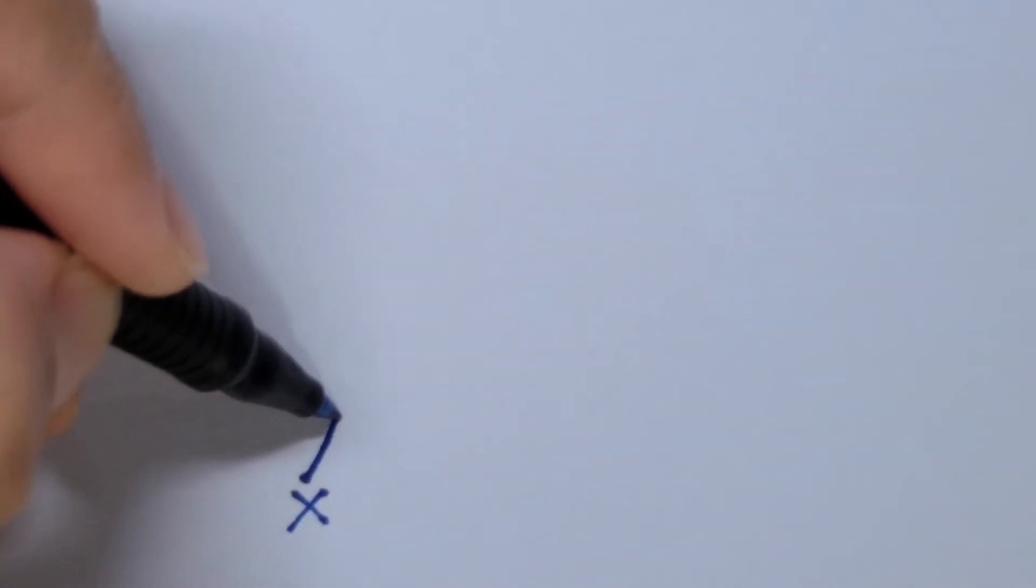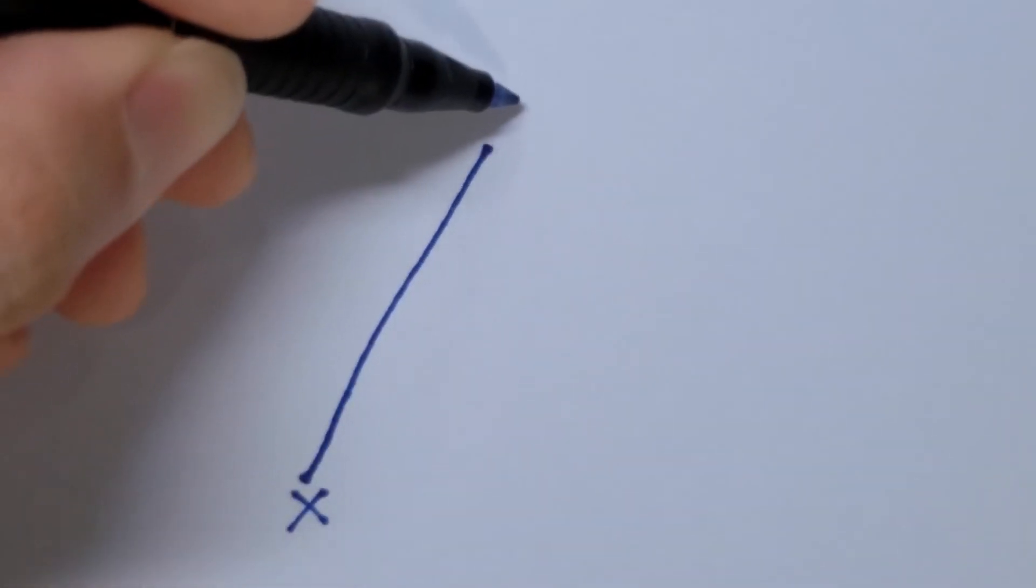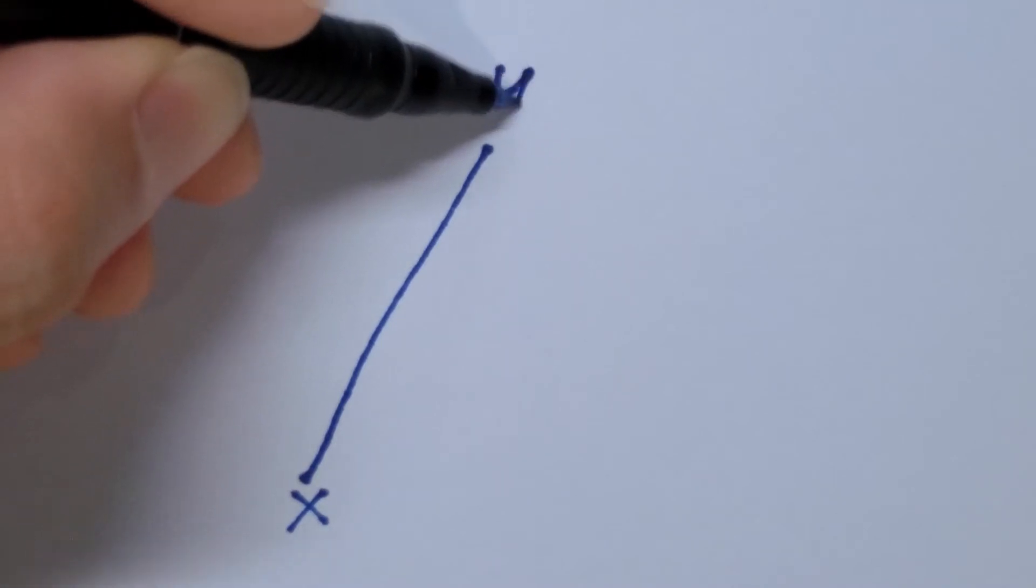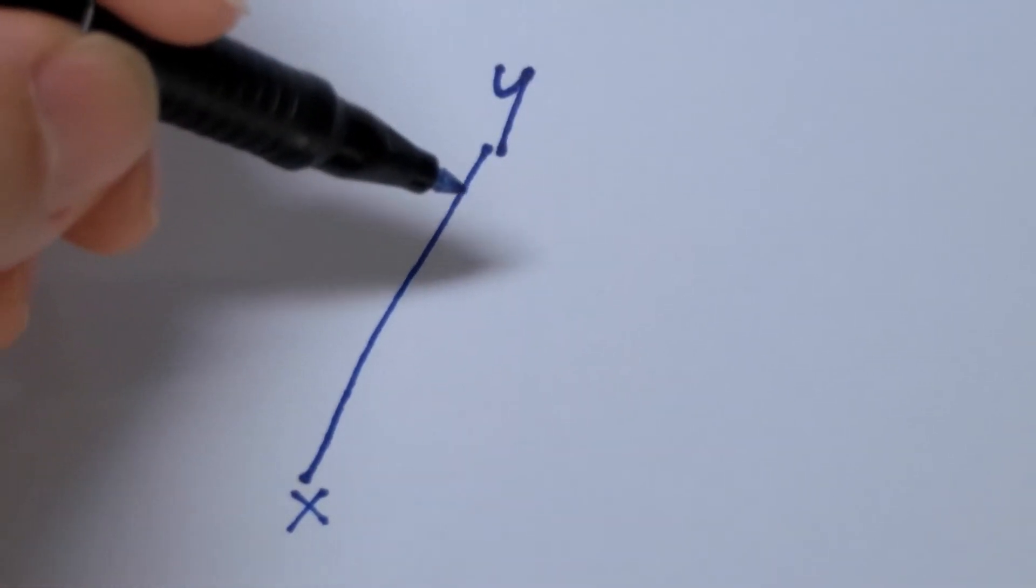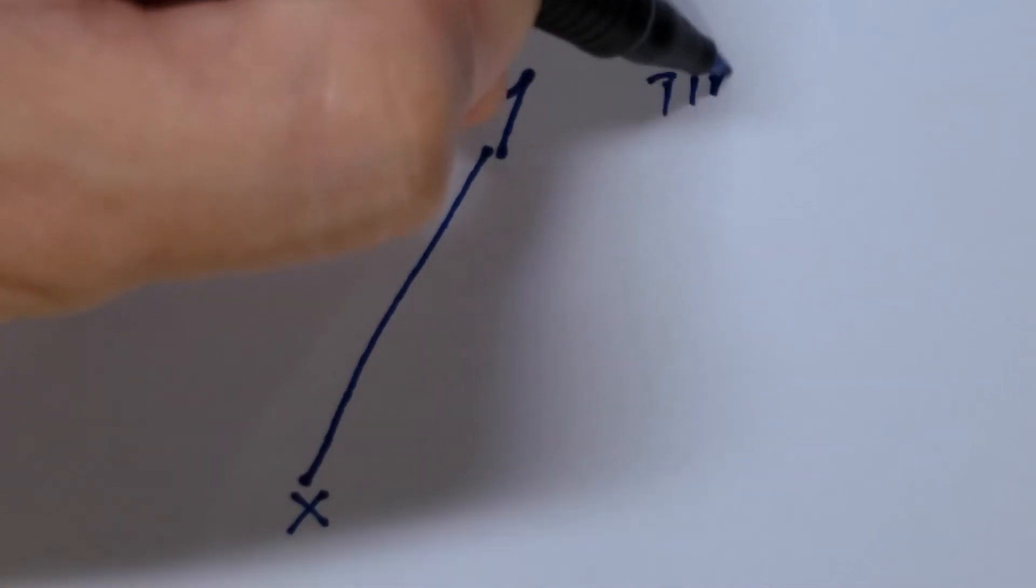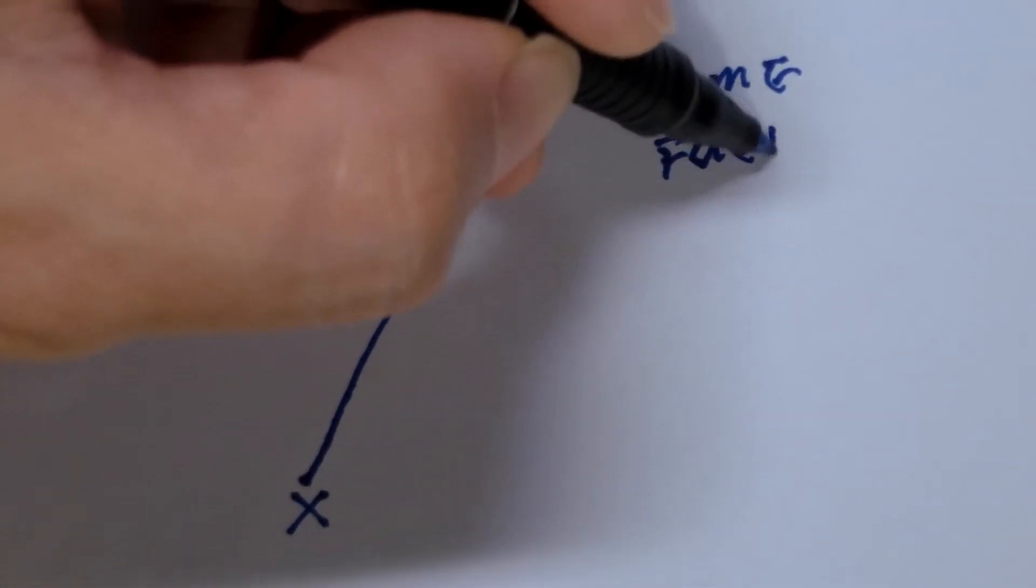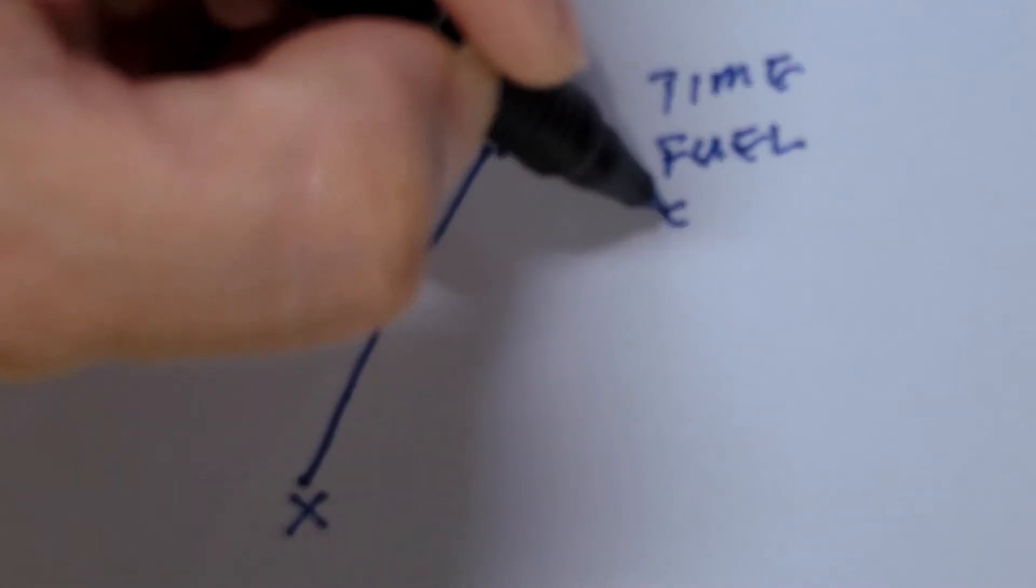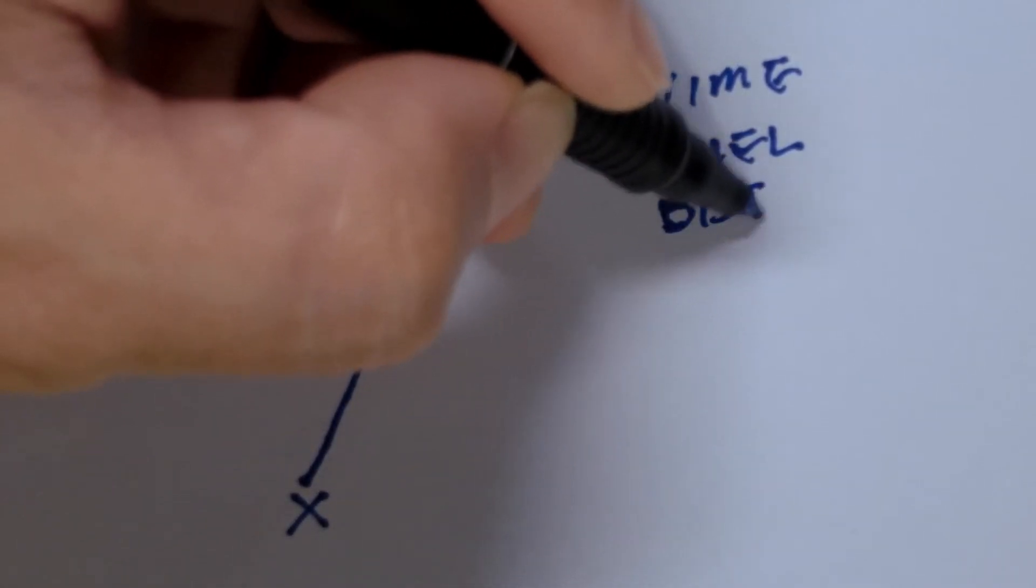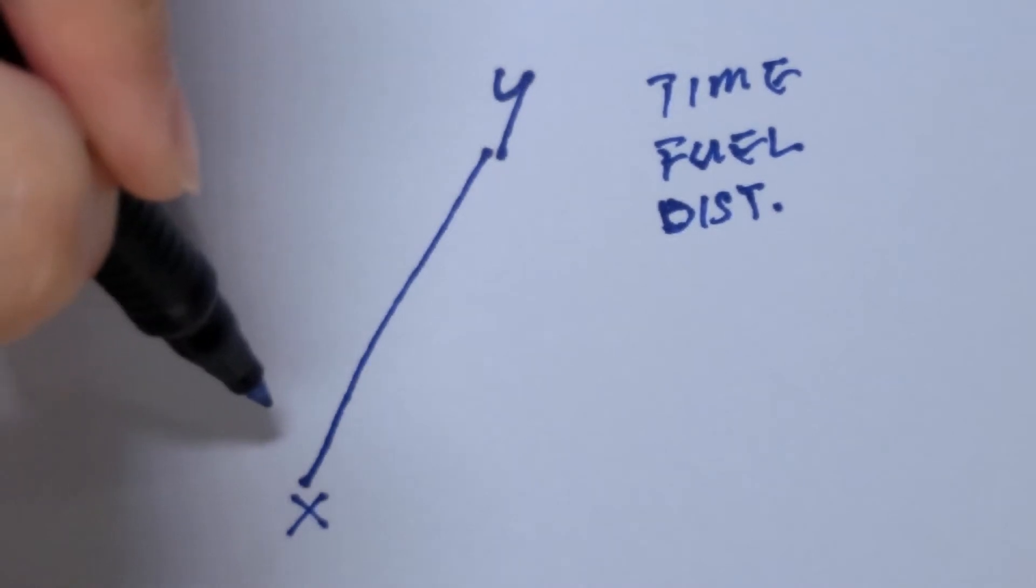How does that work? We will assume that an aircraft takes off from X and climbs to Y. And it would take a certain time, fuel, and cover a certain distance from X to Y.